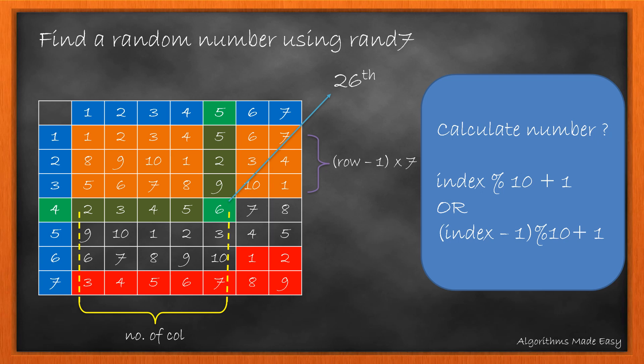As in this case the number mod 10 gives 0. So we can use either of the two formulas shown so as to get rid of 0 while performing the modulus operation.